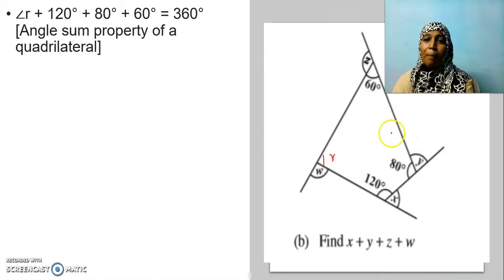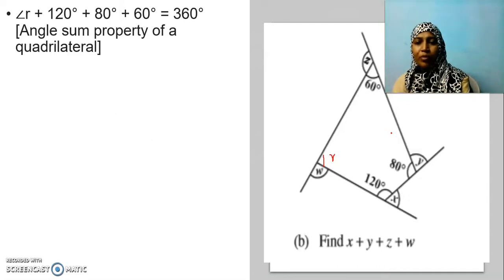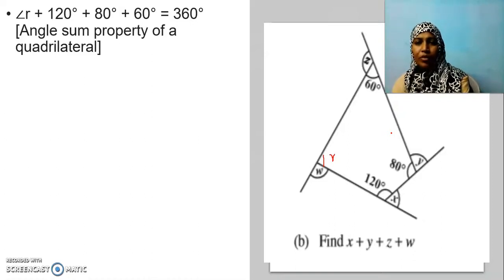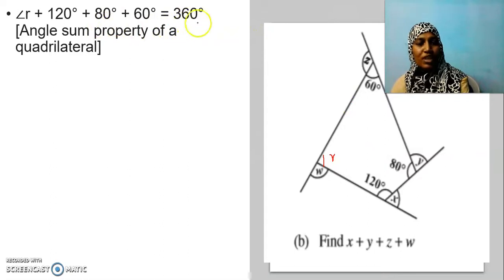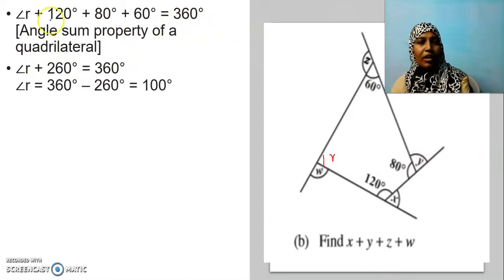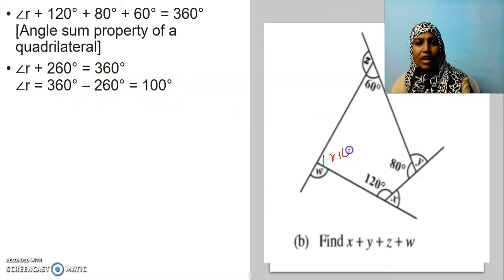Sum of angles in a pentagon, if I have 5 sides, it is 540. If I have a hexagon, add one more 180 along with 540, you get 720. The sum of angles inside a polygon keeps on increasing as the number of sides increases. From this we are going to find r: 120 plus 80 plus 60 is equal to 260. Transposing 260 to the right-hand side, I get angle r to be 100 degrees.